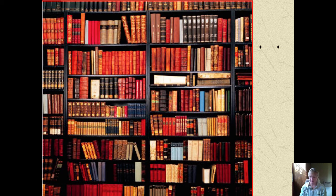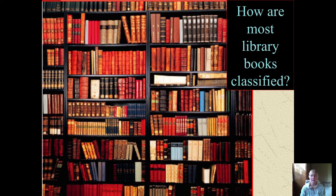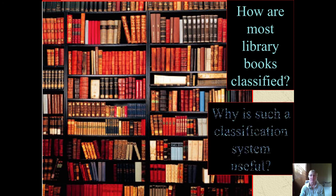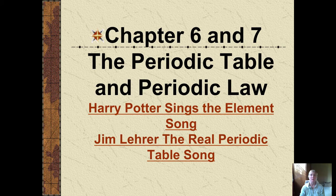What you're seeing here is a library full of books. If you think about how library books are classified, they use some sort of system like the Library of Congress system to help you find a book by author, by type, or by subject, and as you can see similar books can be grouped similarly. That's how a classification system can be useful. The classification system we will be using in chemistry is the periodic table, and in this very short podcast we will be studying the early history of the development of the periodic table and the creation of what is known as the periodic law.